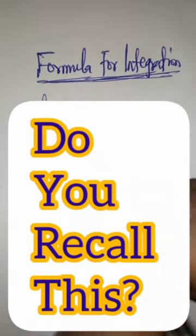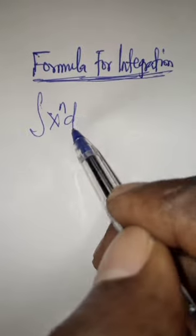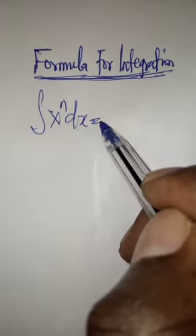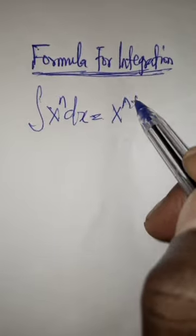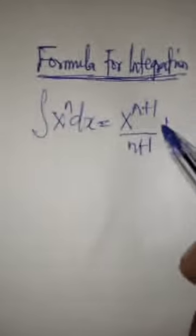A quick one. Here is the general formula of integration: the integral of x to the power of n dx. The result is x to the power of n plus 1 all over n plus 1. Plus constant c.